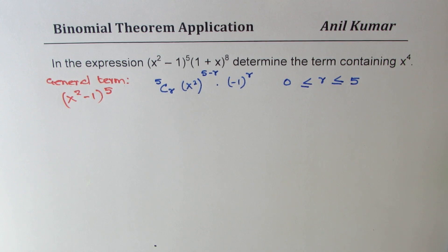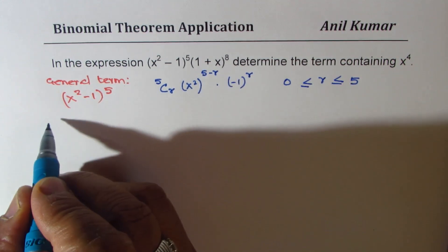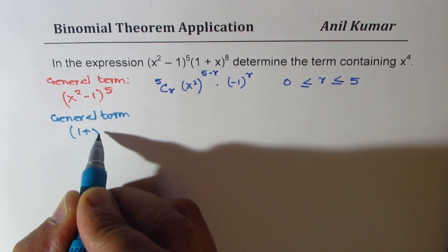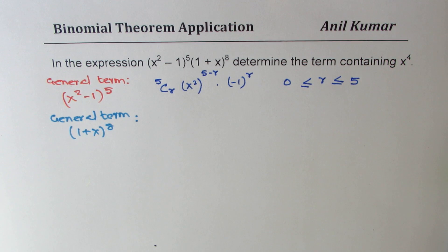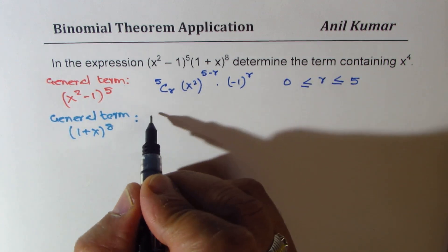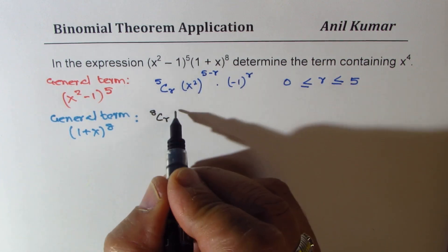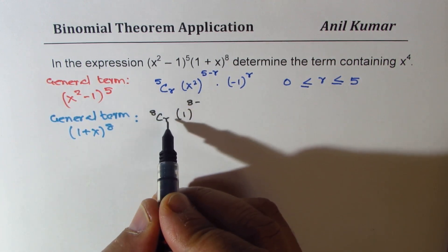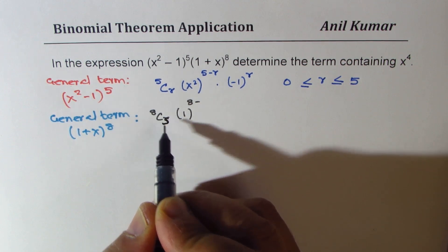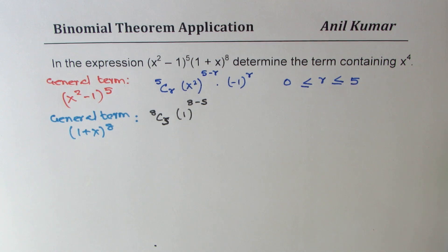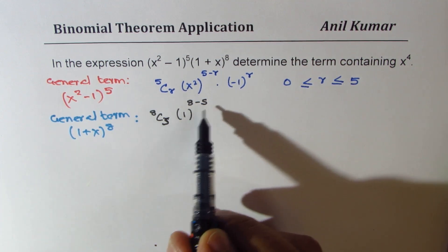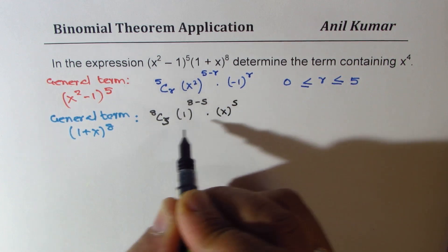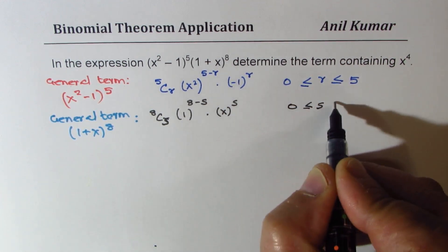Now let's find the general term for the second binomial, (1 + x)^8. The general term will be 8Cs × 1^(8-s) × x^s, where I'm using s instead of r to avoid confusion. Here s will be between 0 and 8.